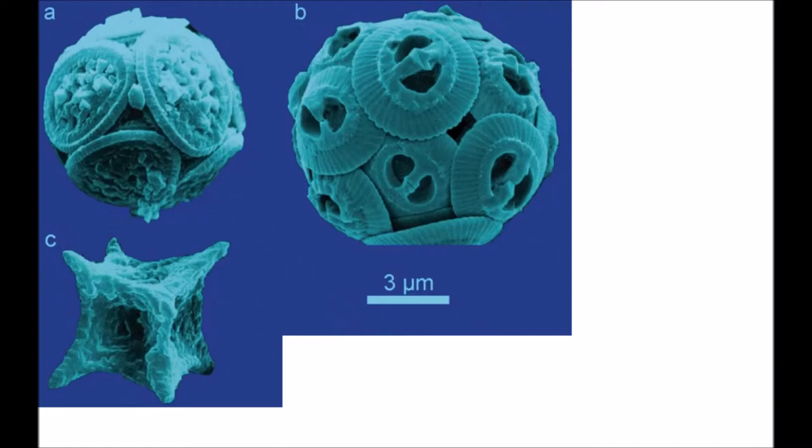The pictures show coccoliths. A is Arkhangelskyella specillata, B is Gephyrocapsa oceanica, C is Micula concava, D is Watznaueria barnesiae, and E is Emiliania huxleyi.